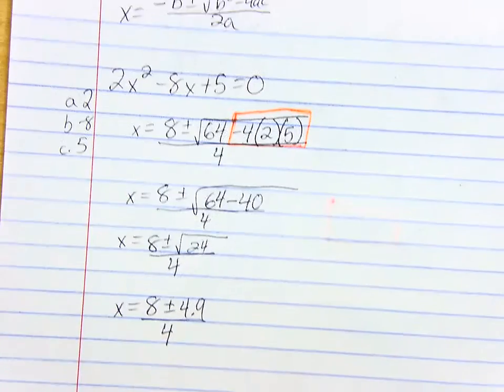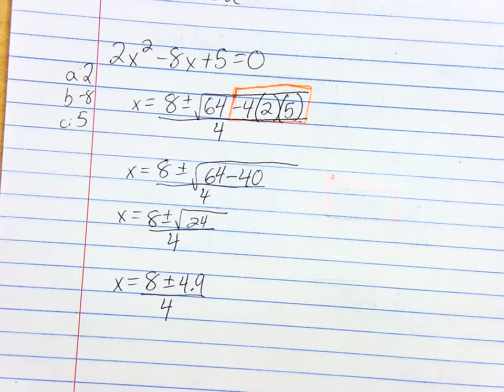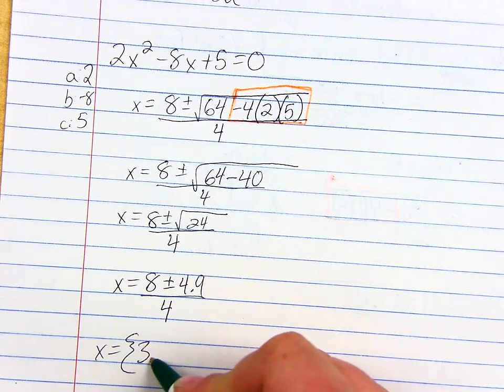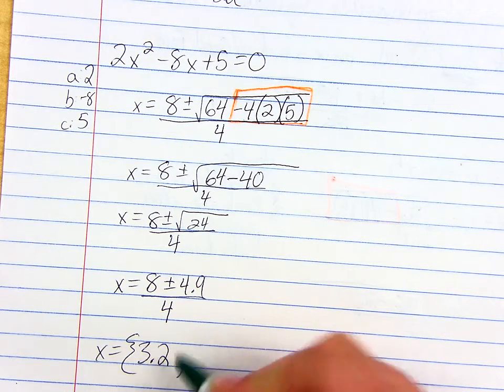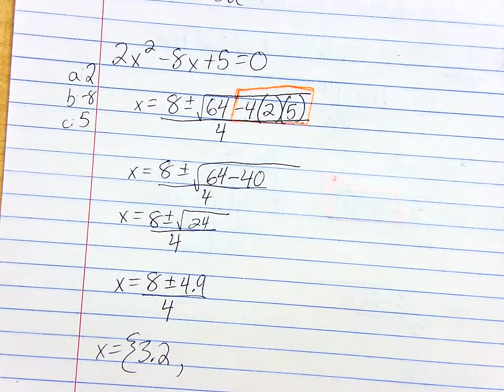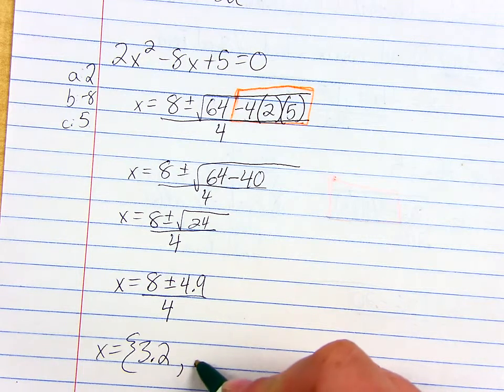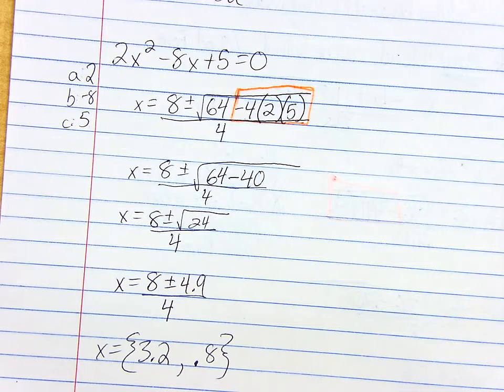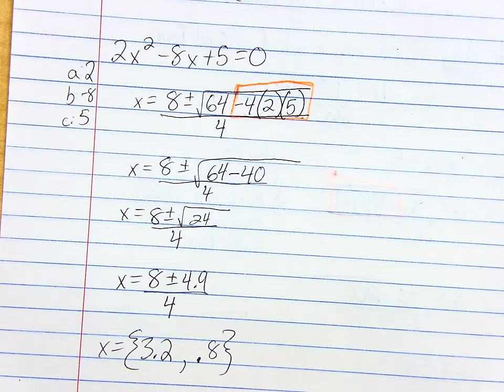And now you're just going to do this math out. Let's do 8 plus 4.9, which is 12.9, and then divide it by 4. That's 3.2. And then we'll do 8 minus 4.9 and divide it by 4. I've got 0.8 if we're rounding to the nearest tenth. And that's it.